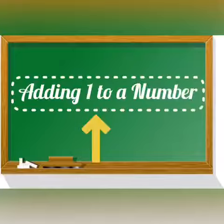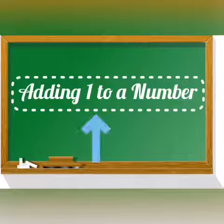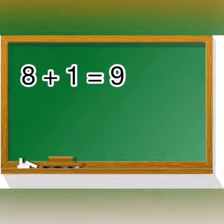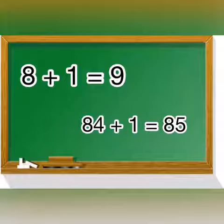Next is adding one to a number. In this when we add one to a number, the sum is the number just after. Like 8 plus 1 equals 9 and 84 plus 1 equals 85.